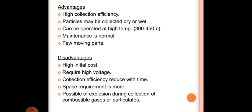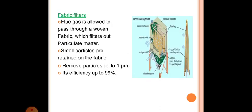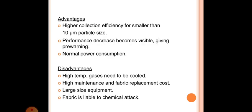Fabric filters: flue gas is allowed to pass through fabric which filters out particulate matter. Small particles are retained on the fabric, remove particles up to one micron, efficiency up to 99%. Advantages are higher collection efficiency for smaller than 10 micron particle size, performance decrease becomes visible giving pre-warning, normal power consumption. Disadvantages are high temperature gas need to be cooled, high maintenance and fabric replacement cost, large size equipment, fabric is liable to chemical attack.